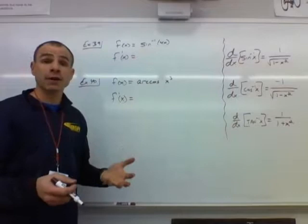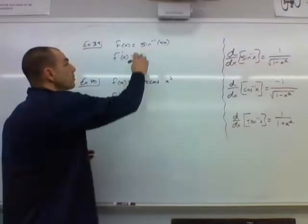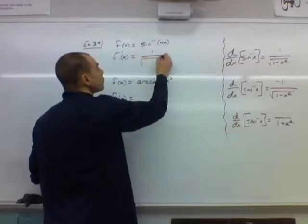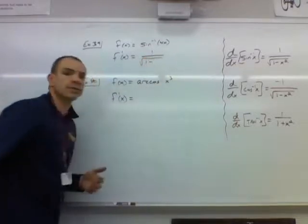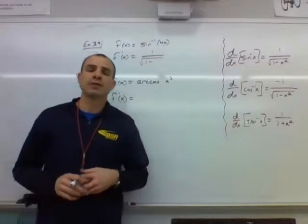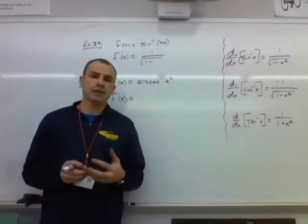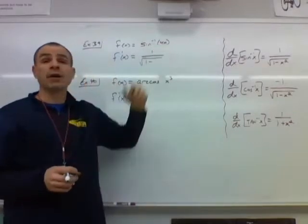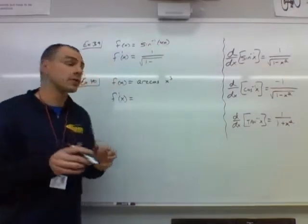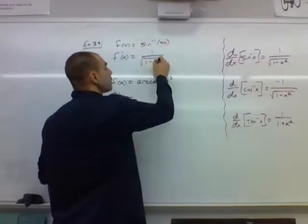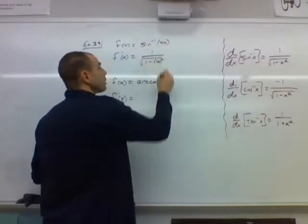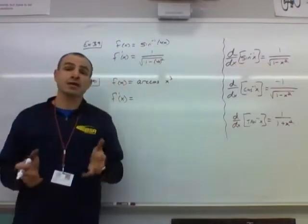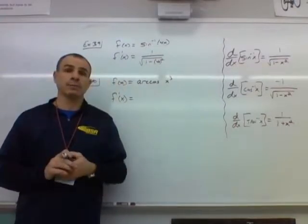So we derive the outer function according to the chain rule. Inverse sine's derivative is 1 over square root of 1 minus—that's the template for the derivative of inverse sine. If there's an x, we put an x right there, but it's not, it's 4x. So now we keep the inner function. Instead of having x squared here, it's going to be 4x squared. You want to be careful to wrap it in parentheses because we're squaring the entire term, not just the x term.